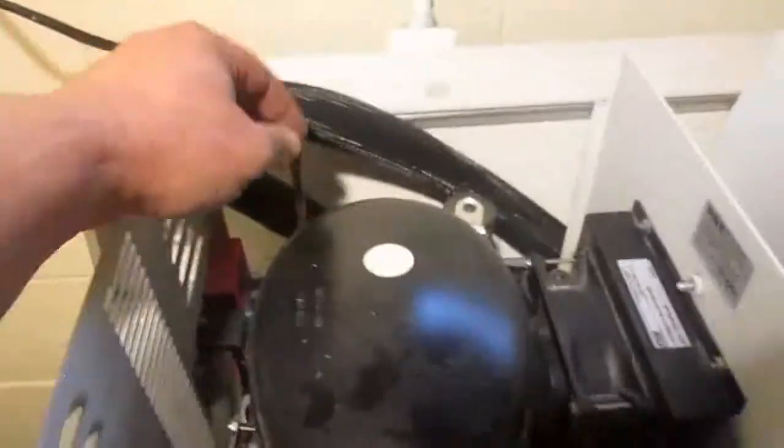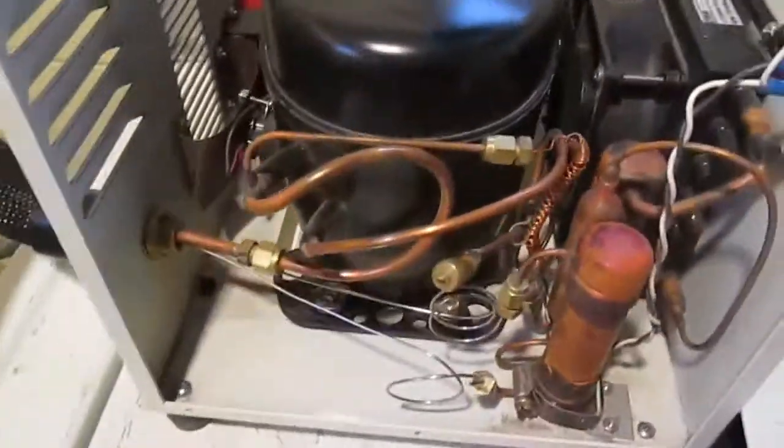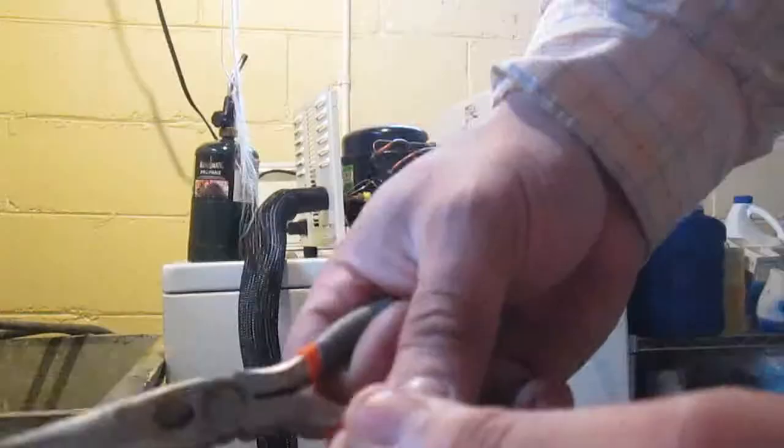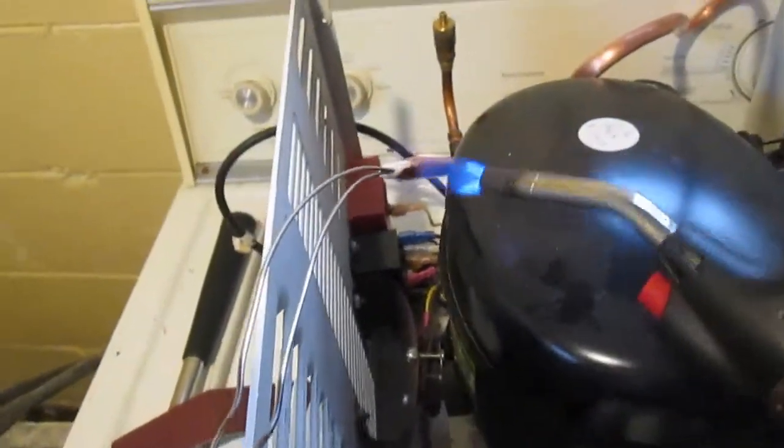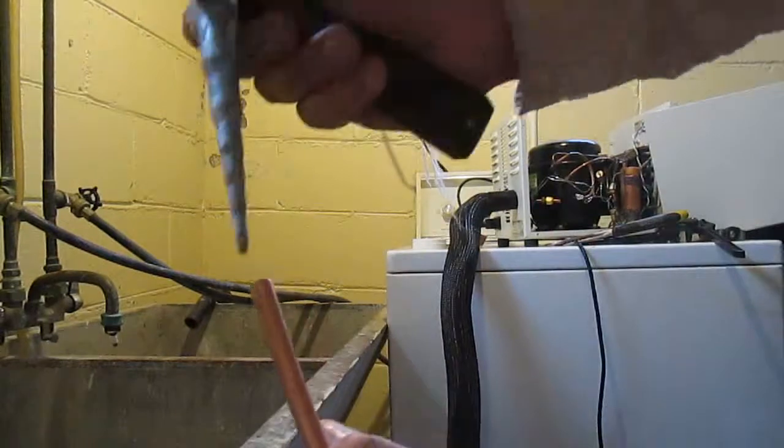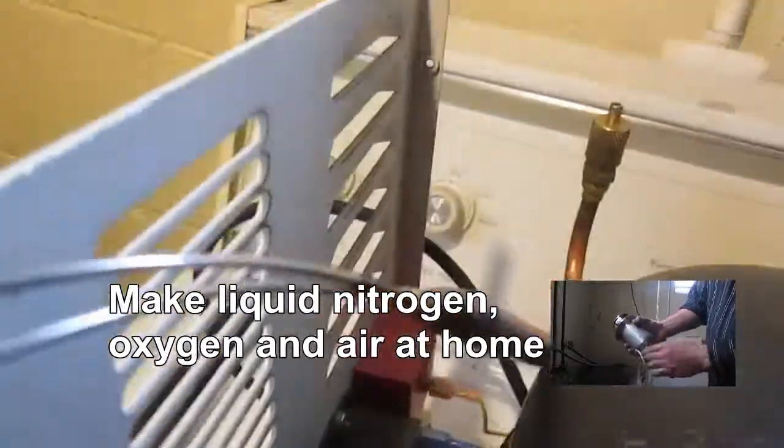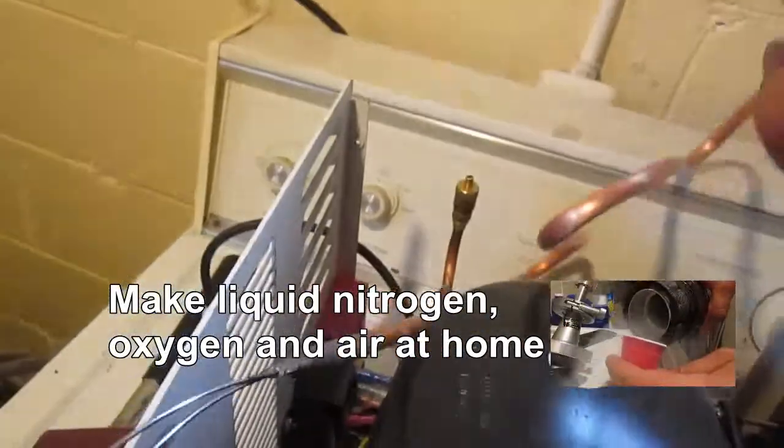These were used as a replacement for liquid nitrogen in high purity germanium detectors used in gamma spectroscopy. But the technology has been replaced by more reliable, longer-lasting, cheaper, and simpler sterling coolers, as demonstrated in the previous video where it could be used to make liquid nitrogen fairly easily.